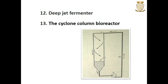In a deep jet fermenter, there is a gas entrainer through which the liquid medium is circulated using a pump. Two basic types of entrainer are the injector and the ejector. In the injector, a jet of medium is surrounded by compressed air, while in the ejector, the liquid jet enters into a larger nozzle and entrains the gas around it.